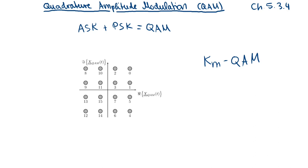In the last two videos we considered amplitude shift keying and phase shift keying — both digital modulation techniques. The first modulated the amplitude of the carrier and the second modulated the phase. We can do both modulations independently to encode two symbols at once, and by combining both we obtain the quadrature amplitude modulation, or QAM.